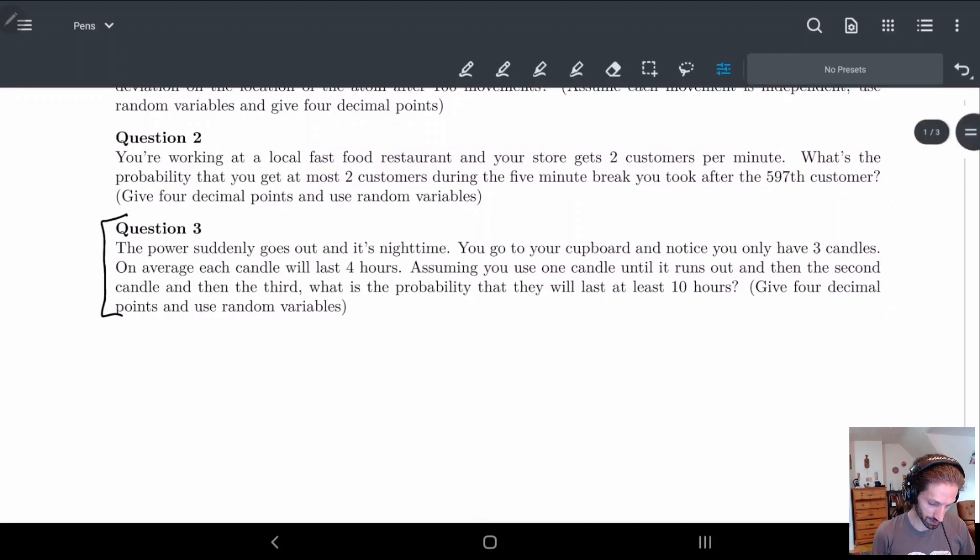So basically what we have is the power goes out and it's nighttime. You go to your cupboard and you notice you only have three candles. On average each candle will last four hours. Assuming you use one candle until it runs out and then the second candle and then the third, we're using one at a time. What is the probability that they will last at least 10 hours? We want to get four decimal points and we want to use random variables.